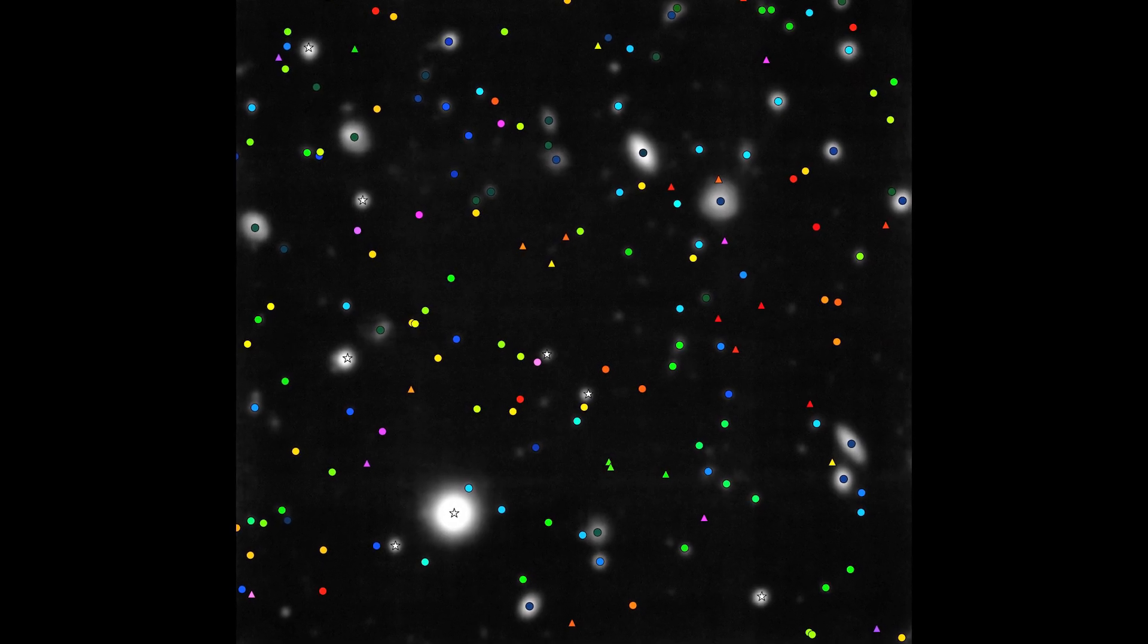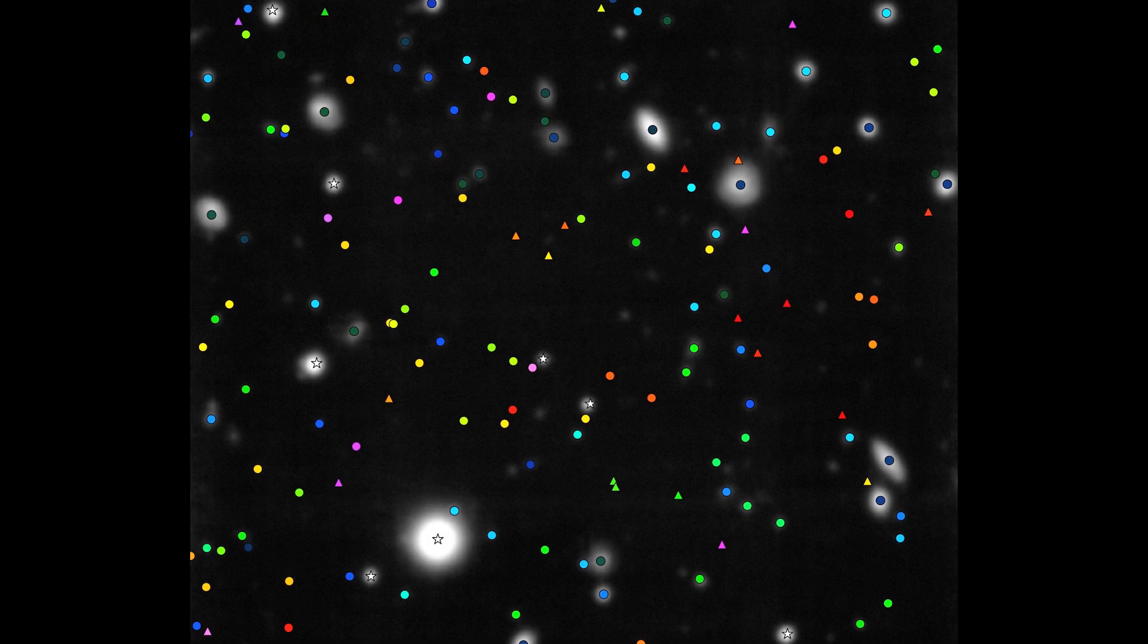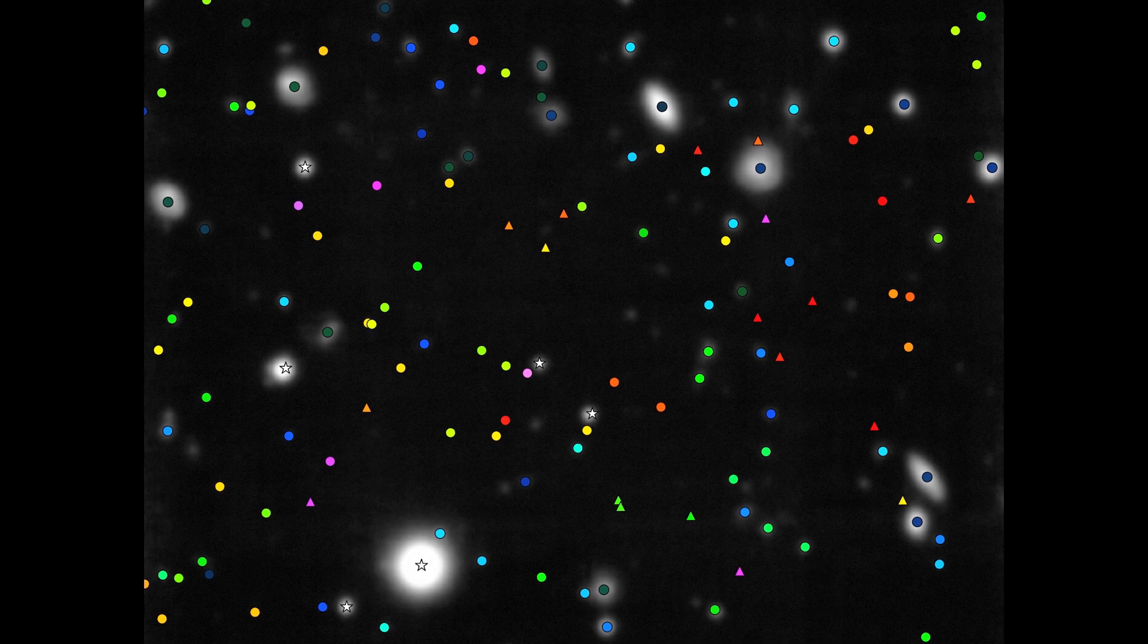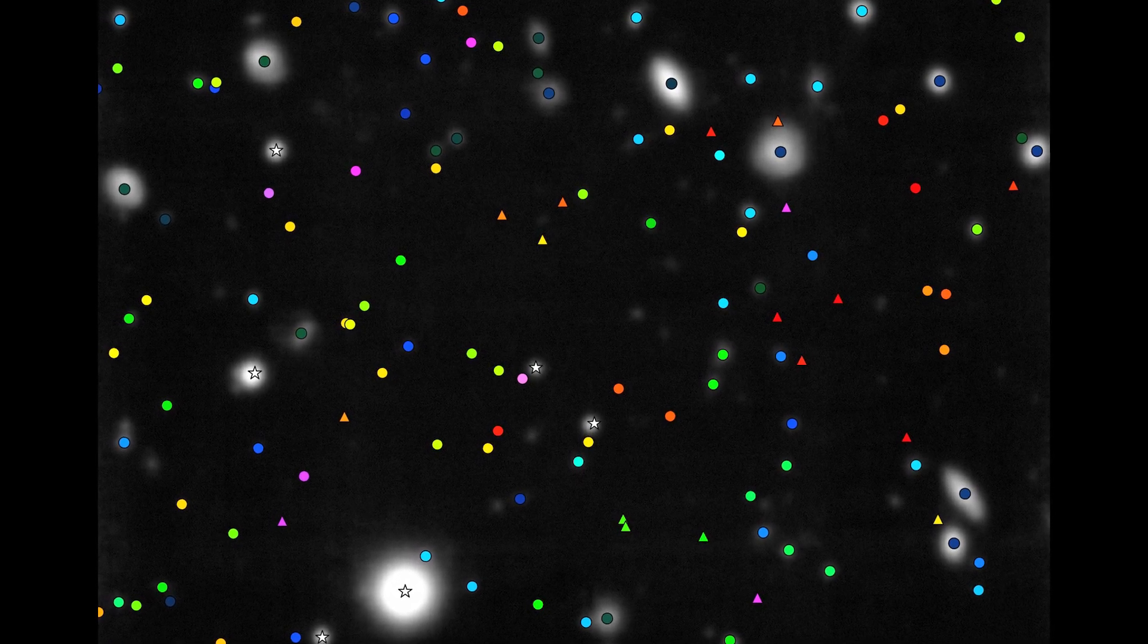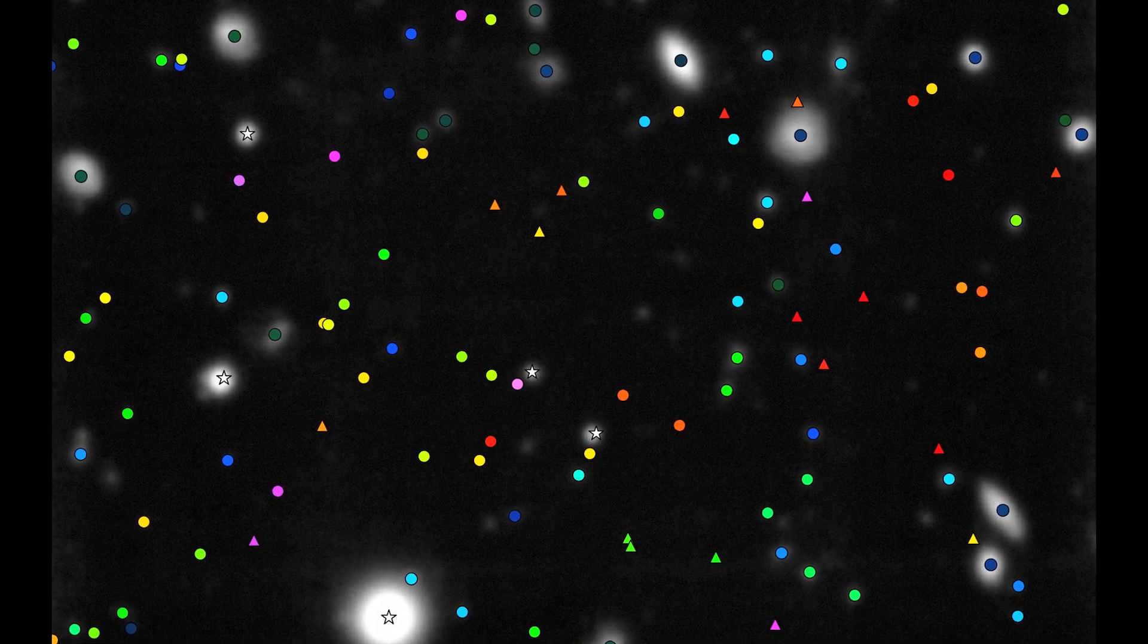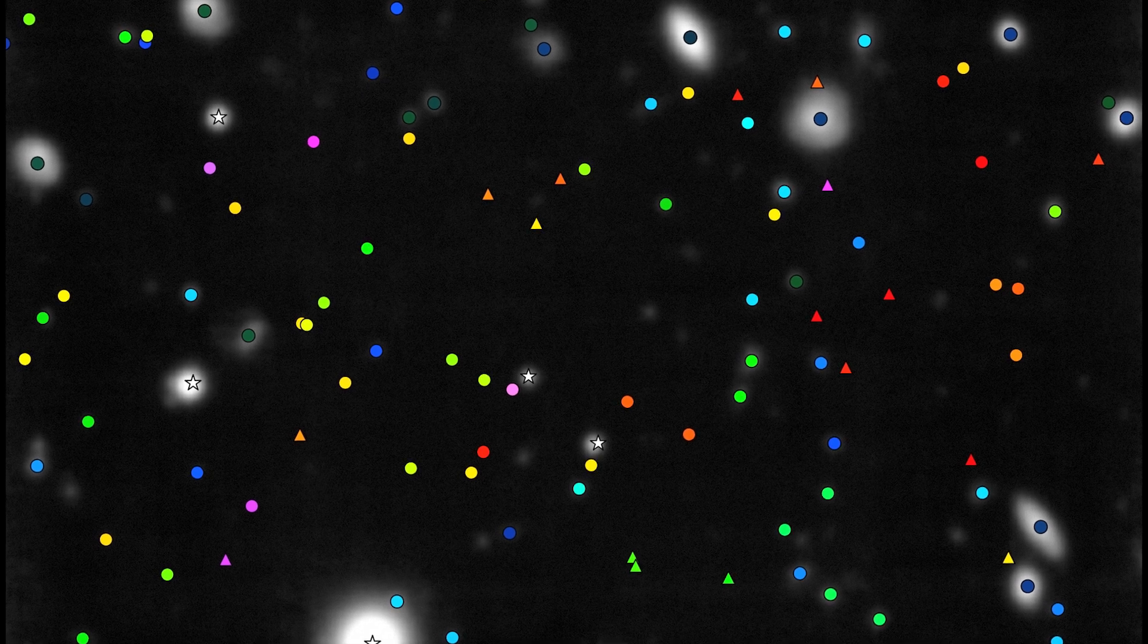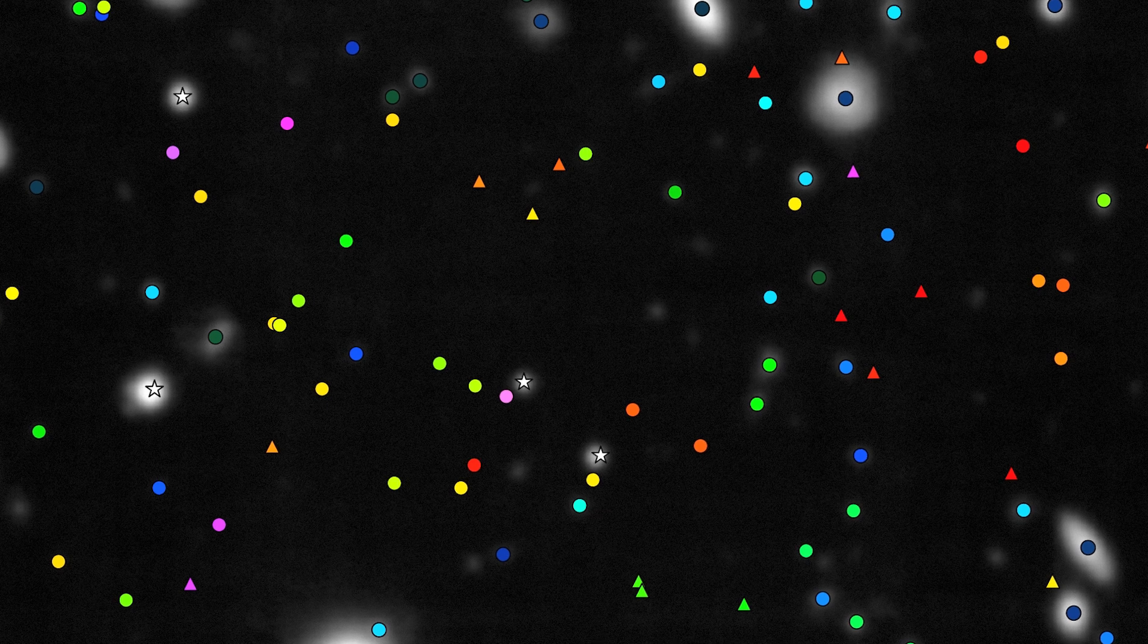The new observations allowed scientists to measure the distances to 189 galaxies in this area of sky. These are marked with colored symbols on this image. The colors show how far away the galaxies are. Blue and green ones are relatively close, and pink and purple ones are very distant. They are seen when the universe was still very young.